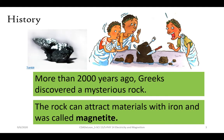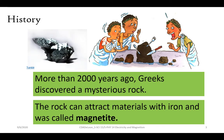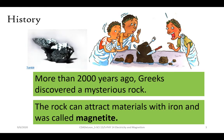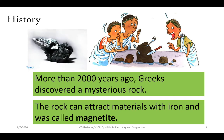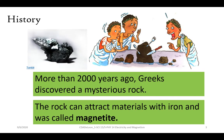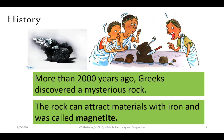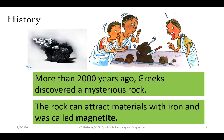More than 2,000 years ago, Greeks discovered a mysterious rock that can attract materials with iron, called Magnetite. Magnetite is a rock mineral and one of the main iron ores with a chemical formula Fe3O4. It is one of the oxides of iron and is ferrimagnetic. It is attracted to a magnet and can be magnetized to become a permanent magnet itself. It is the most magnetic of all the naturally occurring minerals on Earth.